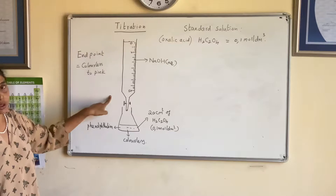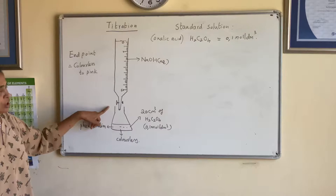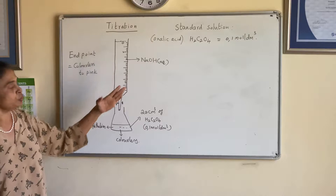The apparatus used here is called a burette, which is a long cylindrical tube that is graduated — zero is at the top, and you can have 50 or 25 centimeter cubed. You also have a conical flask, also called an Erlenmeyer flask.